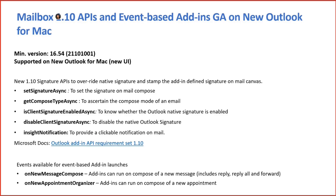A quick recap on the new 1.10 APIs: this covers the Signature APIs, which includes Set Signature Async to set signatures on Mail Compose or Event Compose; Get Compose Type Async, which allows you to ascertain the compose mode of an email; Is Client Signature Enabled Async to know whether the Outlook native signature is already enabled; and Disable Client Signature Async to disable the native signature and insert the signature from the add-in.